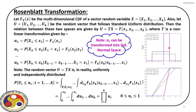Earlier we studied Morgenstern and Natoff models and solved some numerical problems to see how we can use those models to develop joint distributions. In Rosenblatt transformation, we again have a set of random variables. We have a CDF for capital X, the original domain, with random variables X1, X2 up to Xk. We define U as a random vector following standard uniform distribution.